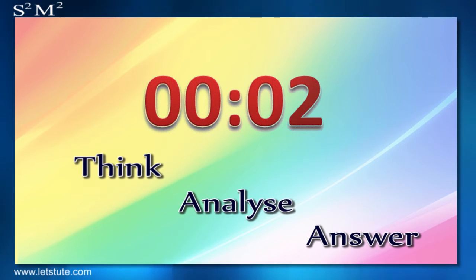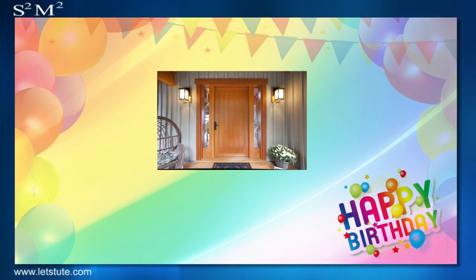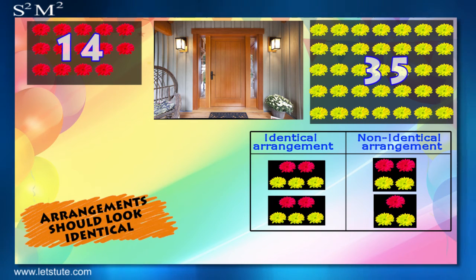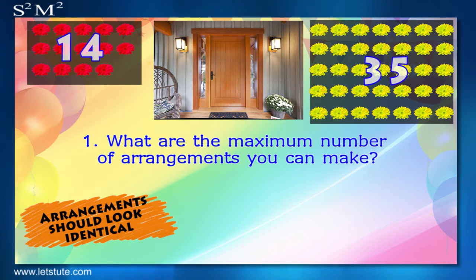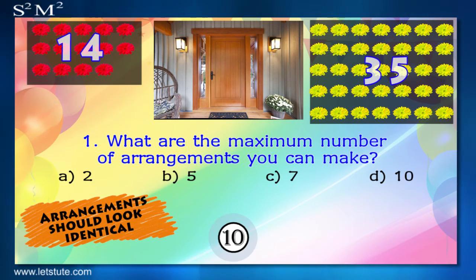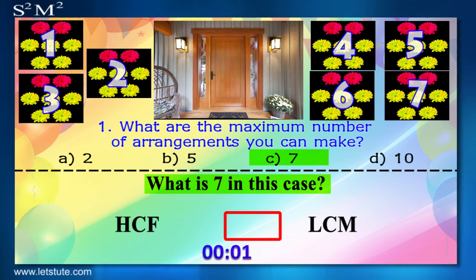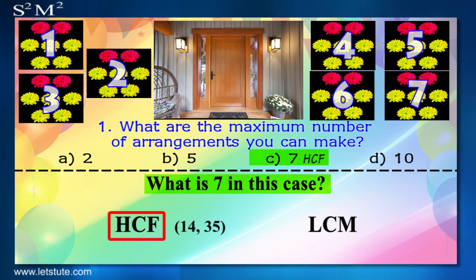Suppose you have to decorate the entrance door for a child's birthday party. You are going with 14 red and 35 yellow flowers for this purpose. Now you have to arrange all these flowers in such a way that every arrangement you make should look identical. So, can you tell us what are the maximum number of arrangements you can make?